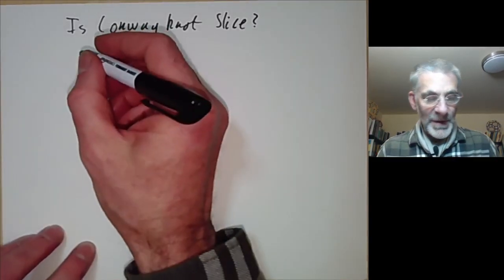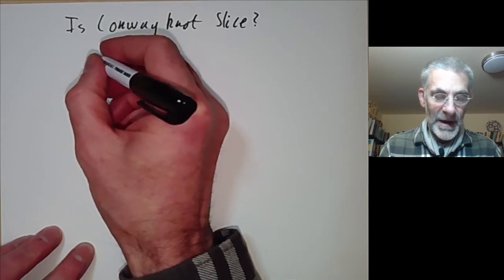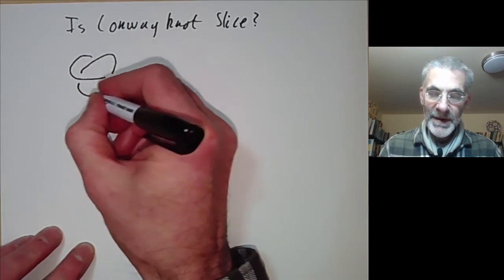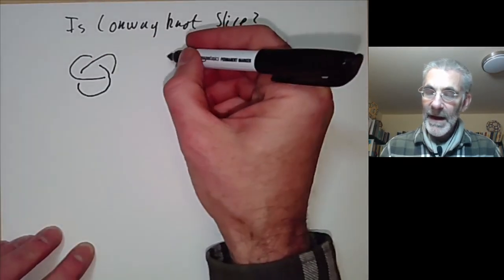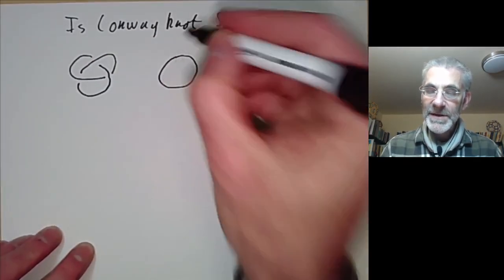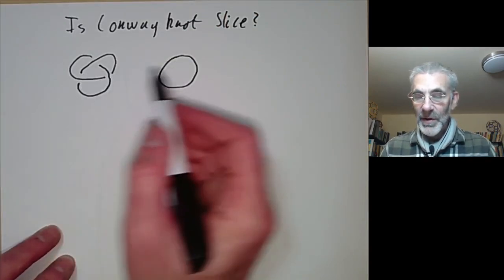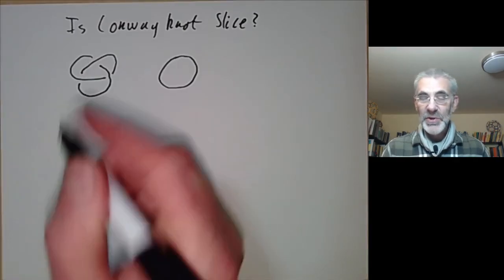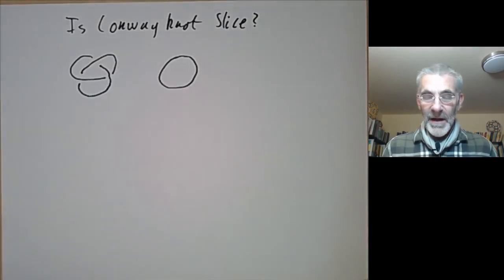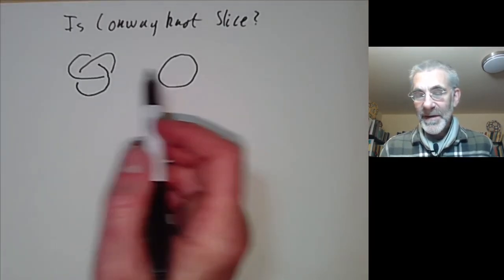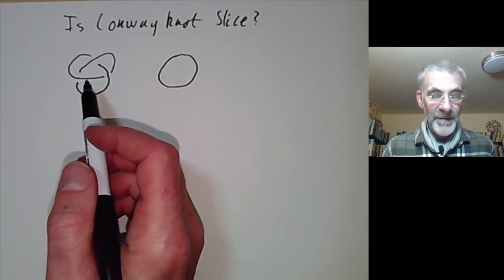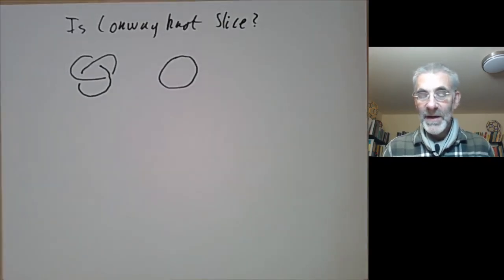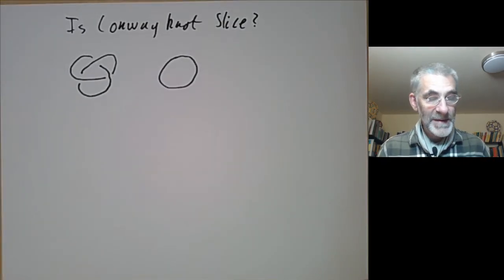First of all, we should review what a knot is. A typical knot might be something like the Trefoil Knot, which looks something like this. And if you've got two knots, you might want to tell whether they're different. Is the Trefoil Knot different from an Unknot? It sort of looks intuitively obvious that they're different, and for simple knots like this it's not very difficult to tell. But in general, if you've got a really complicated knot and another really complicated knot, it can be really hard to tell whether they're the same or not.